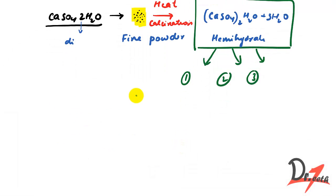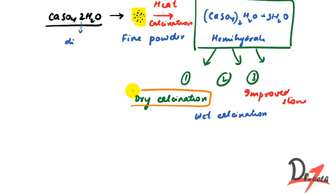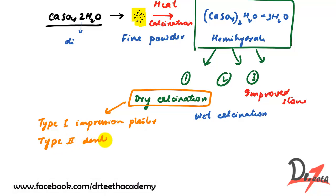The first method is dry calcination, the second is wet calcination, and the third is the improved stone. In dry calcination, we get type one impression plaster and type two dental plaster. We will see why we get these.